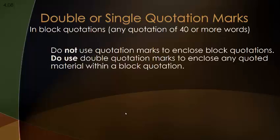A little bit more on block quotations — most people don't know what these are. Any quotation of 40 or more words: you do not use quotation marks to enclose block quotations. However, you do use double quotation marks to enclose any quoted material within a block quotation. Since you're not using double quotation marks around the block quotation itself, if you're quoting something inside of it, you do use double quotation marks. Please check your APA manual on where to put the citation for a block quotation.